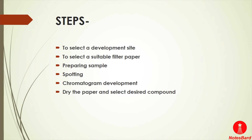The third step is sample preparation, which involves dissolving the sample in a suitable solvent. The fourth step is spotting, where the samples are spotted in the proper position on the paper. This is followed by chromatogram development — the paper is immersed in the mobile phase solvent. Due to capillary movement, the mobile phase moves over the sample on the paper. The final step is drying the filter paper and then selecting and detecting the desired component using detecting agents.